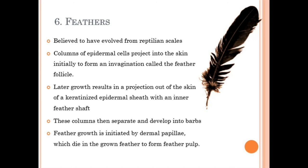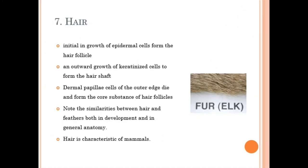Feather growth is initiated by dermal papillae, which die during growth to form a feather pulp — the main axis of the feather. As it grows, the cells die and the pulp is formed. Hair is a characteristic feature of mammal skin. Instead of feathers, mammal skin has hair. Its development is similar: outgrowth of specialized cells forms the hair shaft, then dermal papillae cells at the outer edge die and form the core substance of the hair follicle — very similar to feather development.